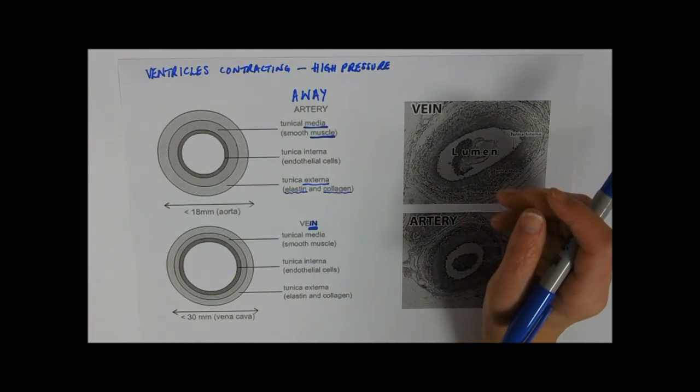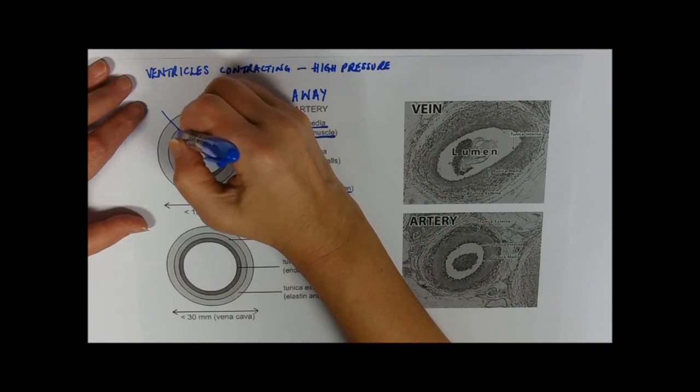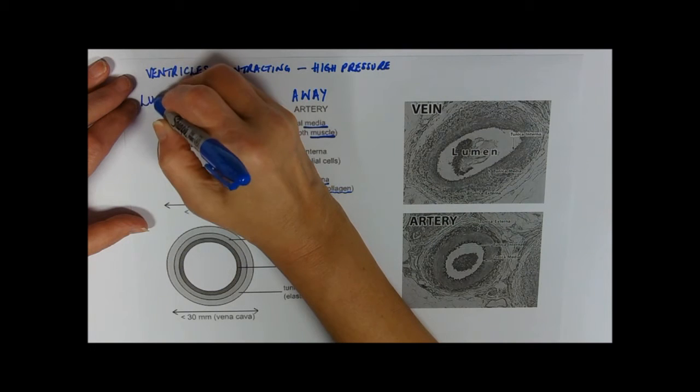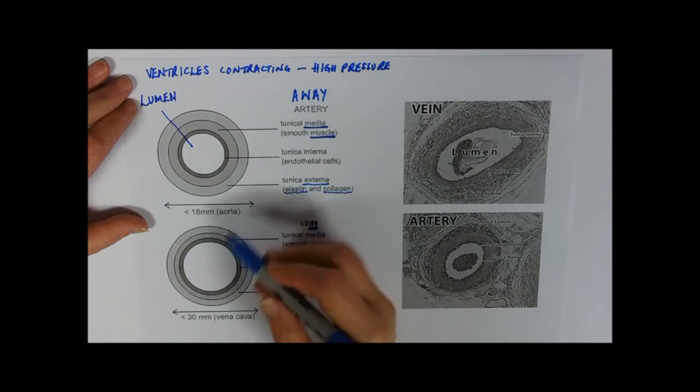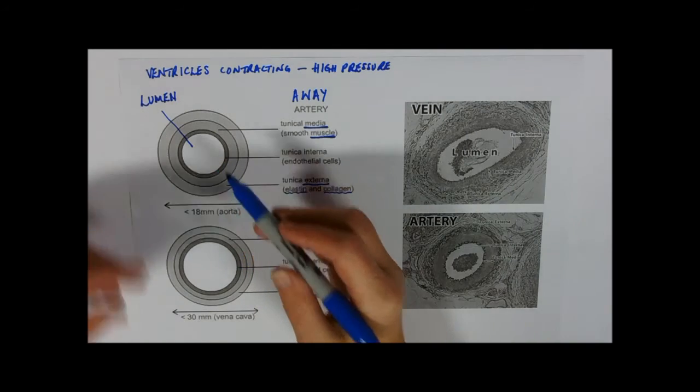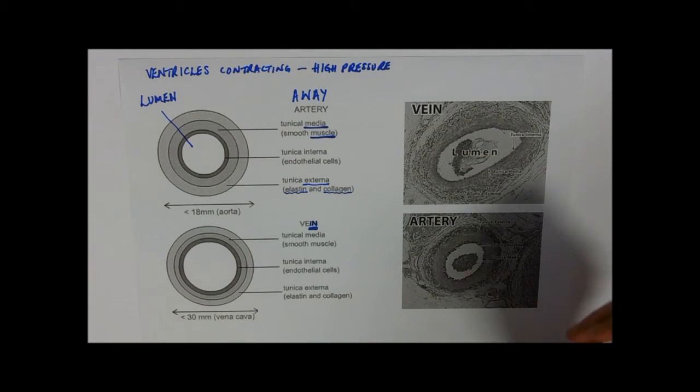The other bit that's not labeled on here is the lumen. Comparing that to the vein, it's a much narrower lumen, and this is to maintain that pressure. It's like putting something through a very narrow hose pipe and it raises the pressure. You've all done the thing where you've had a hose pipe fight and you stuck your thumb over the end of the hose pipe so that it'll spray more and be under much higher pressure.